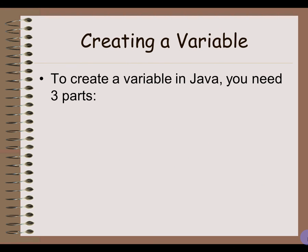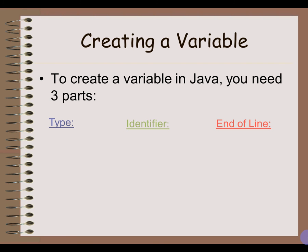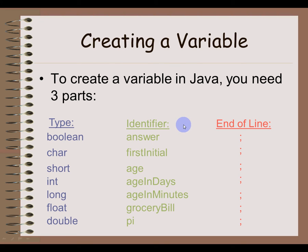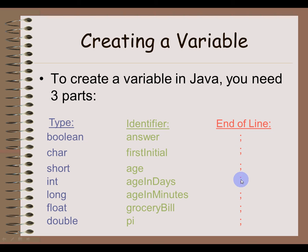So how do you create a variable in Java? To do that, you have to have three parts: the type of variable, the identifier of the variable, and the end-of-line character. The type of the variable represents what type of information you're going to store as well as the amount of memory required to store it. The identifier is the name of the variable — what you call it so you know what information it's storing. And every line of code in Java always ends with a semicolon.